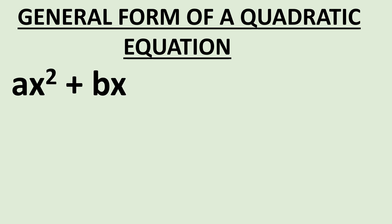We'll be looking at the general form of a quadratic equation, which is ax squared plus bx plus c equals 0. When we talk of quadratic equations, we simply mean equations where the highest power of the variable equals 2. When the highest power is 1, you have a linear equation.